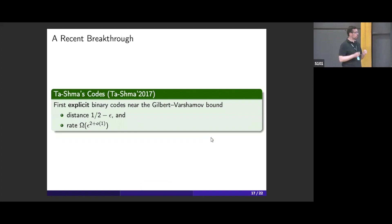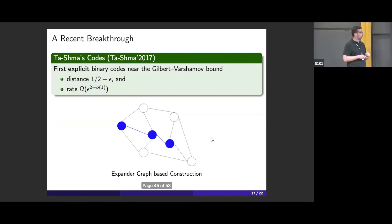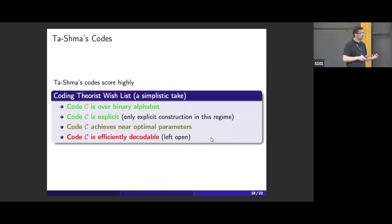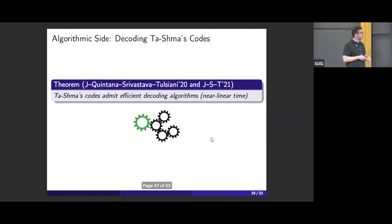In terms of explicit construction, for a long time, we had no idea how to construct nearly optimal codes. Recently, in 2017, Tashma gave a beautiful construction of codes very close to the random parameters. They achieved distance half minus epsilon and rate about epsilon squared. The main technique was the use of expander graphs - a generalization of the zigzag construction of expander graphs. For coding theory, Tashma's construction was extremely nice. The code was explicit, achieved near-optimal parameters. One thing that was left open was decoding. Can we decode those codes? More recently, we showed that yes, there are algorithms to decode these Tashma codes.